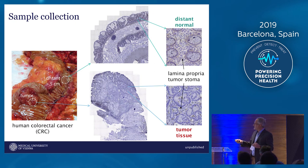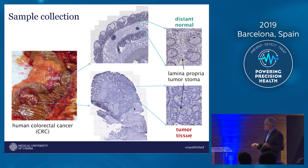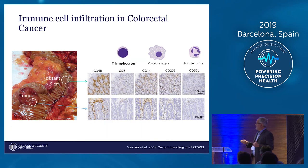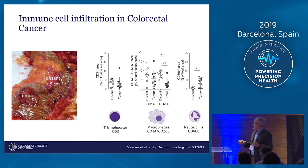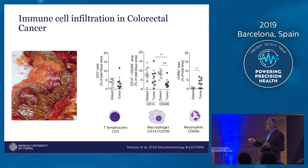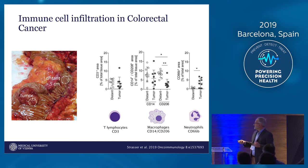Between these islets of tumor cells, we have a lot of immune cells. The lamina propria in the normal mucosa corresponds to the tumor stroma. Here you see the infiltrating immune cells — lymphocytes, macrophages, and neutrophils. We quantitated them and could show that the overall lymphocyte count is more or less the same. The macrophages are decreased in comparison to normal, and the neutrophils are strongly increased.